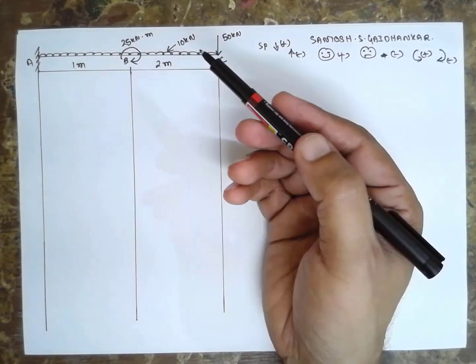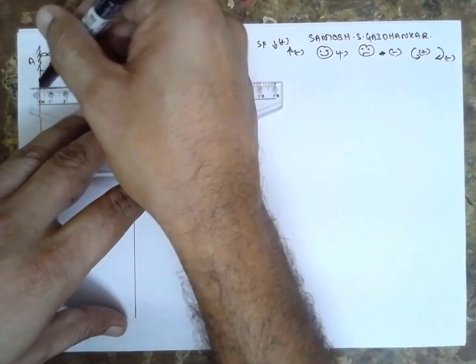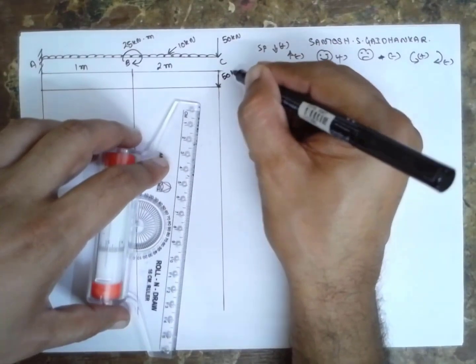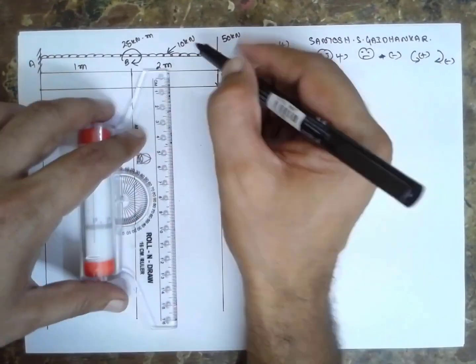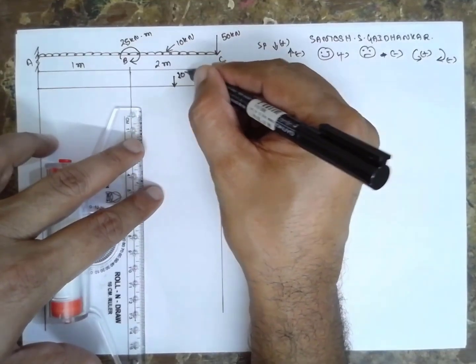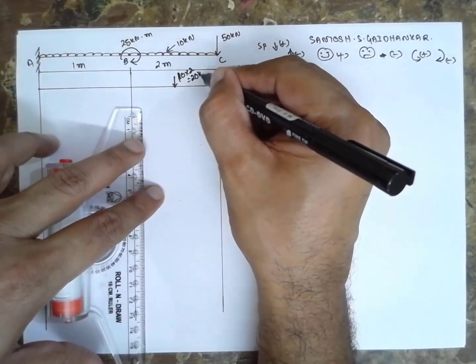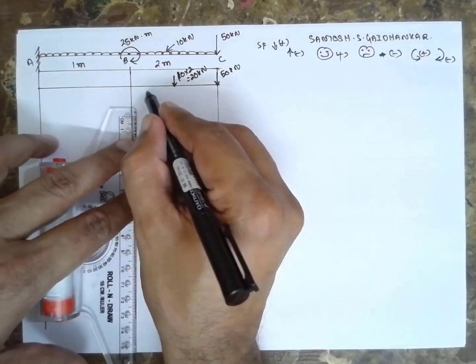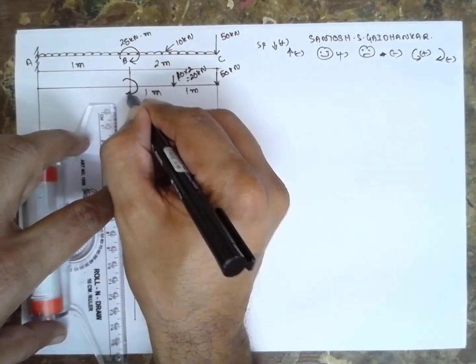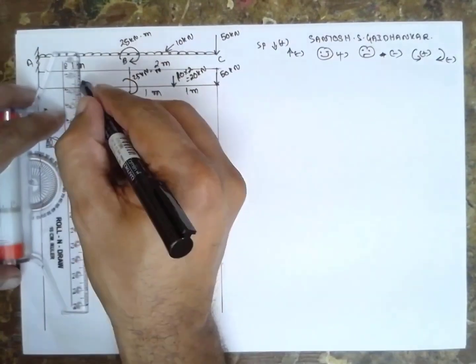First I will convert into point loads. First is 50 kN. Next point load, exactly at the center for the UDL, that is 10 x 2 = 20 kN, with 1 meter on this side and 1 meter on this side. And there is a couple here, 25 kN.